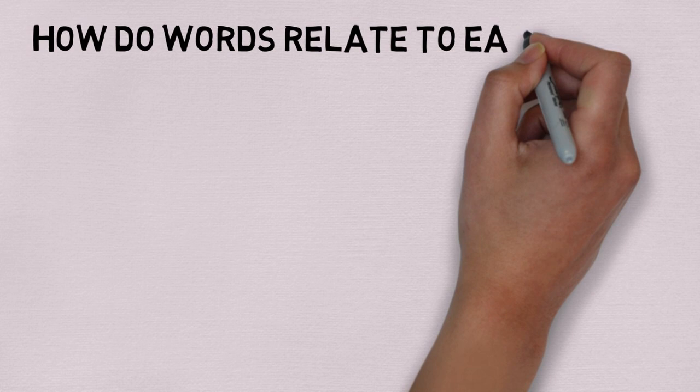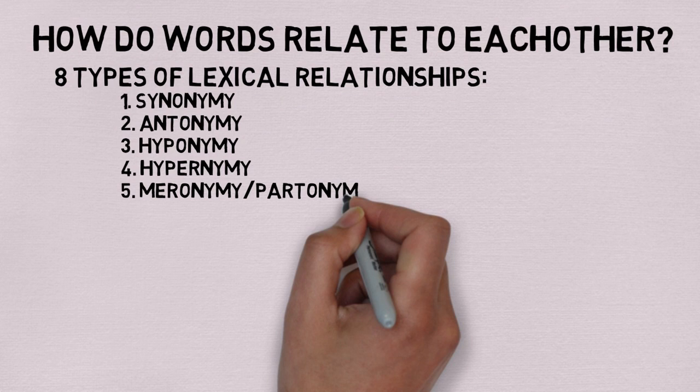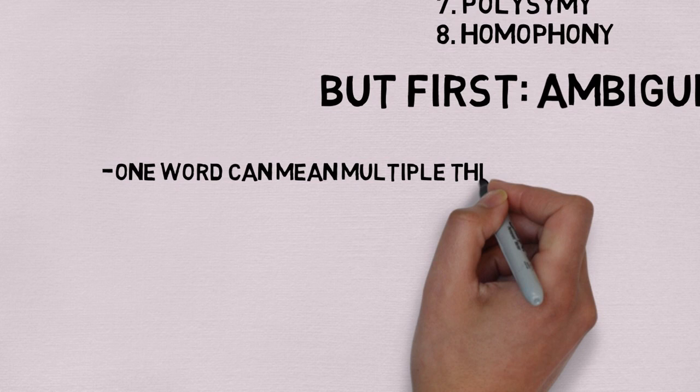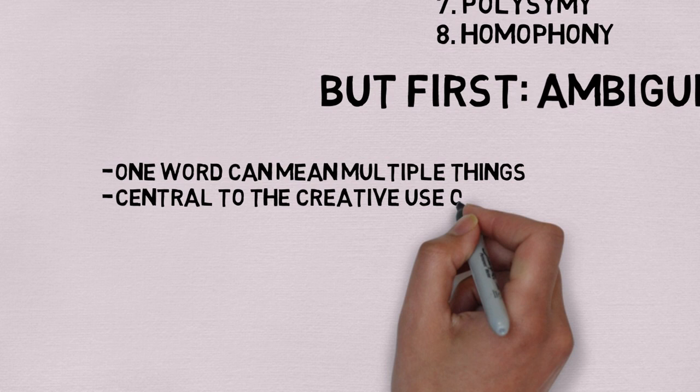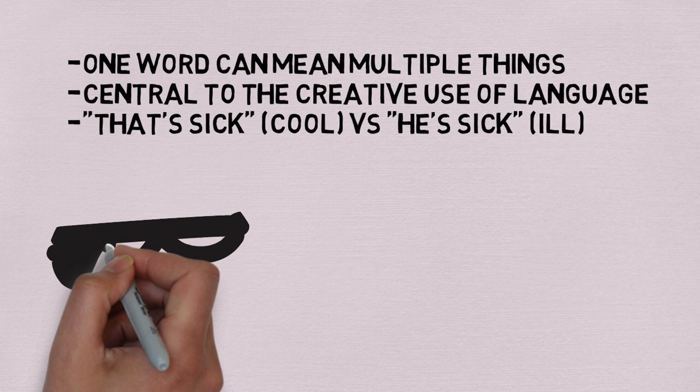To start with, we're going to talk about how words relate to each other. These relationships are called lexical semantic relations, and there are eight main semantic relations that we will be going through one by one. Before we start, though, I'd like to talk about a central feature of language: ambiguity. Ambiguity is the feature of language that allows single words to mean multiple things depending on different contexts. In English, you can find ambiguity all over the place — take the word 'sick,' as in 'I am sick' or 'that's sick.'